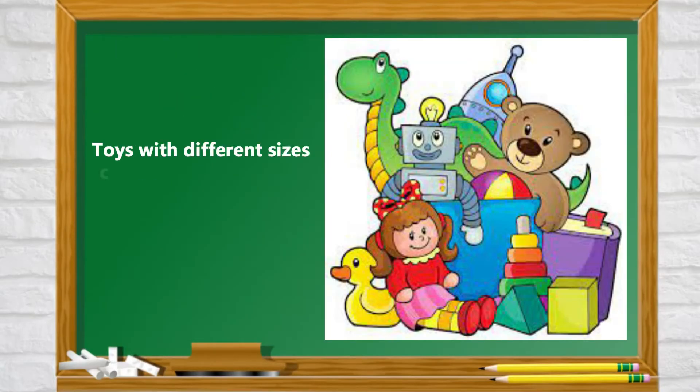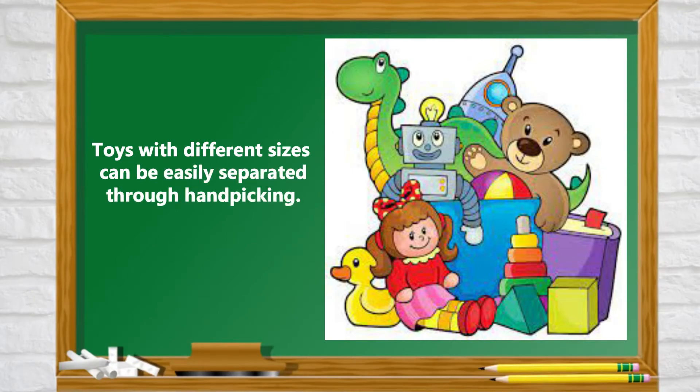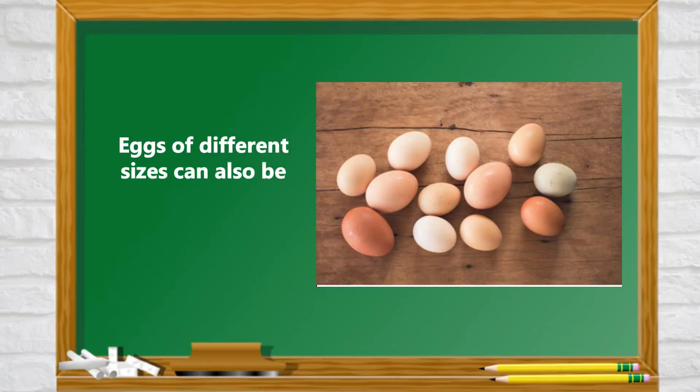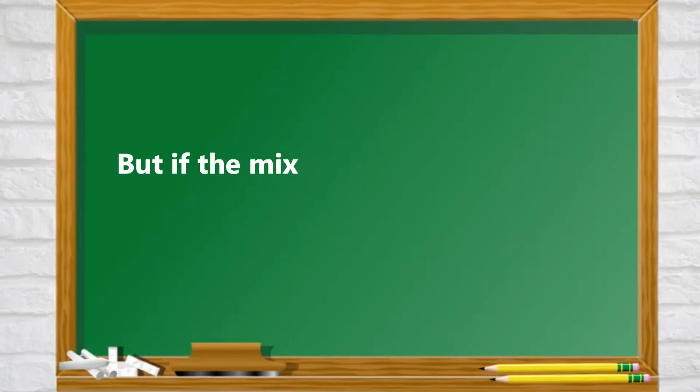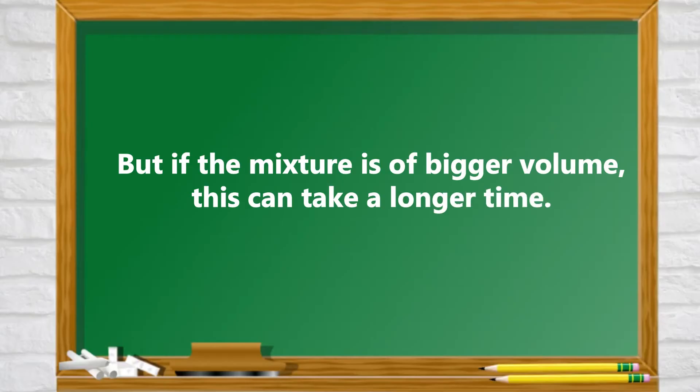Toys of different sizes can be easily separated through hand picking. Eggs of different sizes can also be separated using manual separation or hand picking. But if the mixture is of a bigger volume, this can take a longer time.